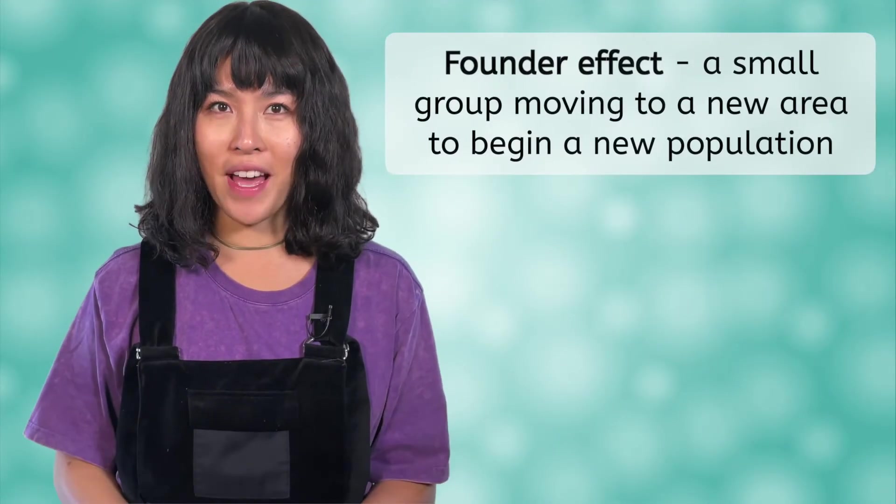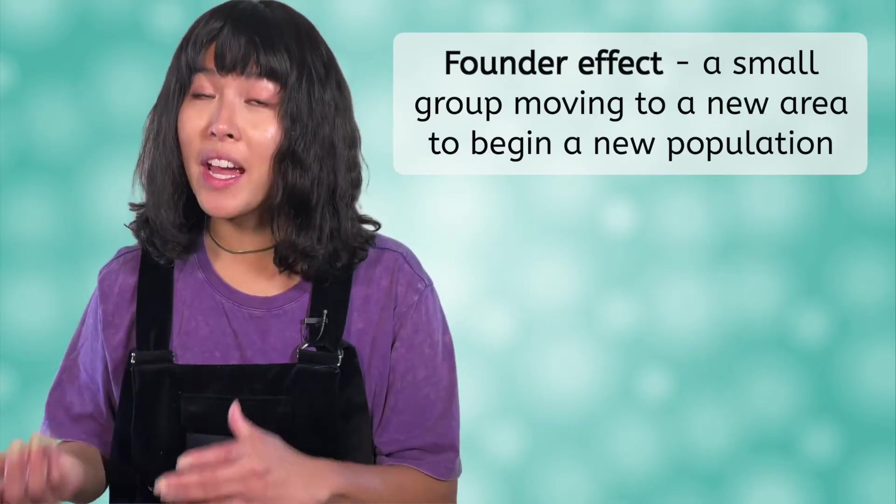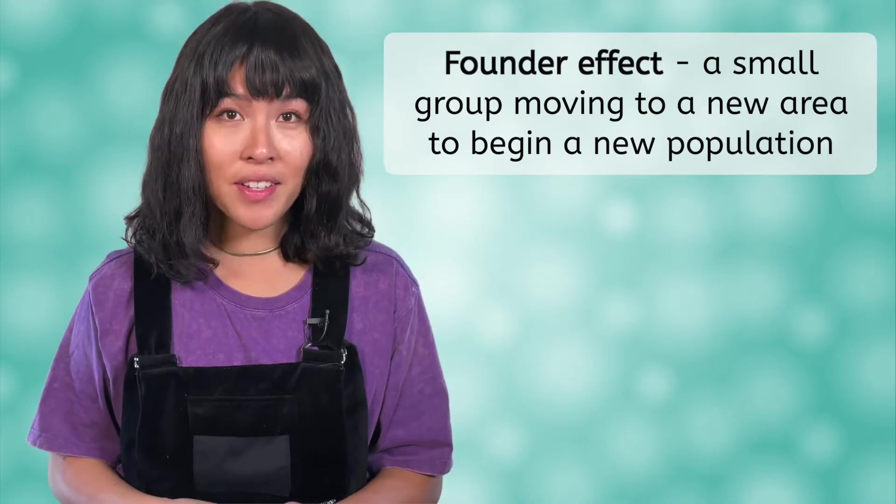The first type of genetic drift we will look at is called a founder effect, and occurs when a small group of organisms moves to a new area and begins a new population. In the natural world, this can occur unintentionally when animals or even seeds get carried long distances during a storm or flood, or a small group of animals could intentionally migrate to find areas that are less crowded and have less competition. In either case, the ones that leave and form a new population are the founders.